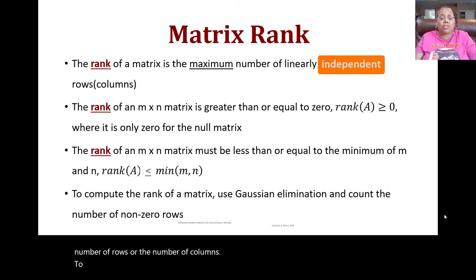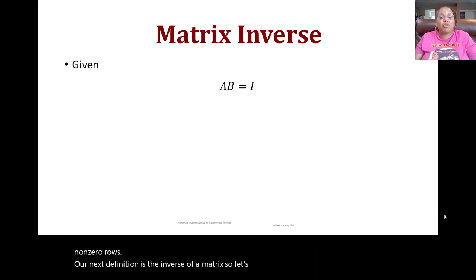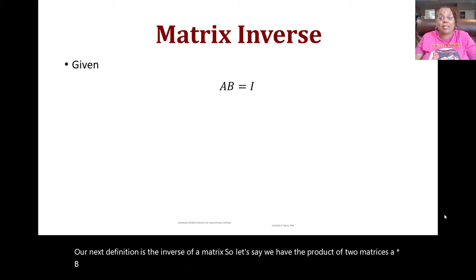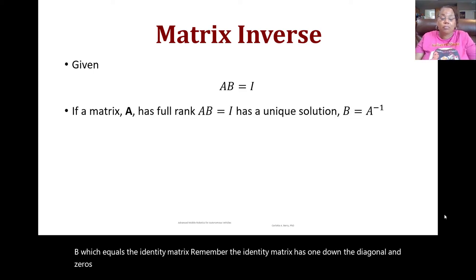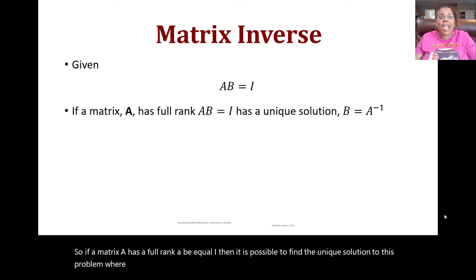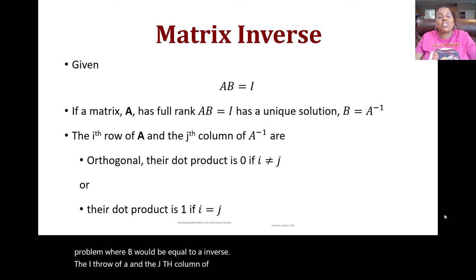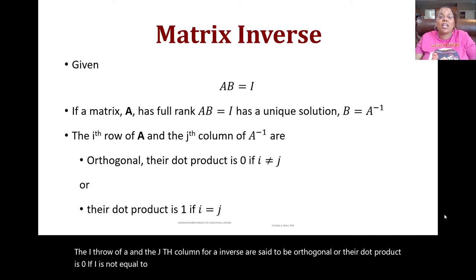To compute the rank of a matrix, you can use Gaussian elimination and count the number of non-zero rows. Our next definition is the inverse of a matrix. If a matrix A has full rank and A times B equals the identity matrix — which has ones down the diagonal and zeros everywhere else — then there exists a unique solution where B equals A inverse. The i-th row of A and the j-th column of A inverse are orthogonal: their dot product is zero if i ≠ j, and one if i = j.